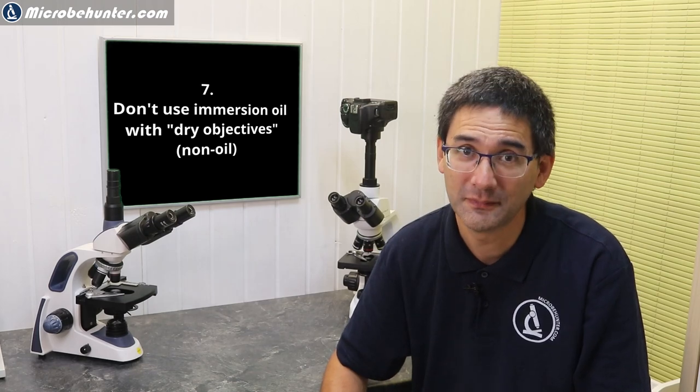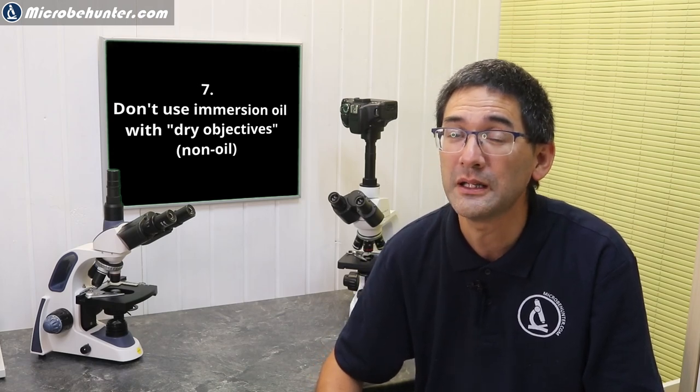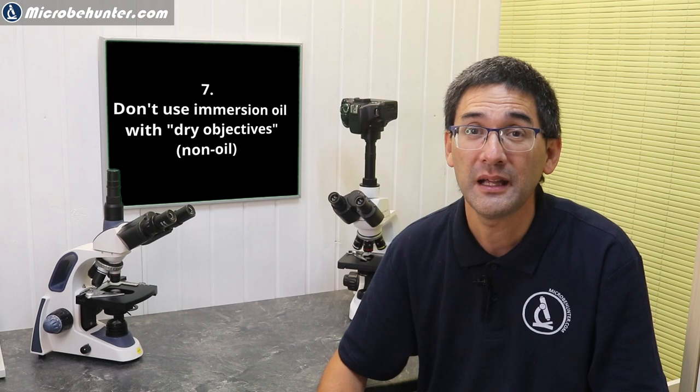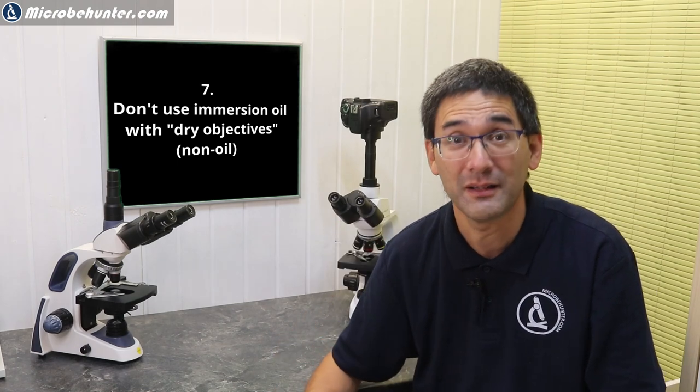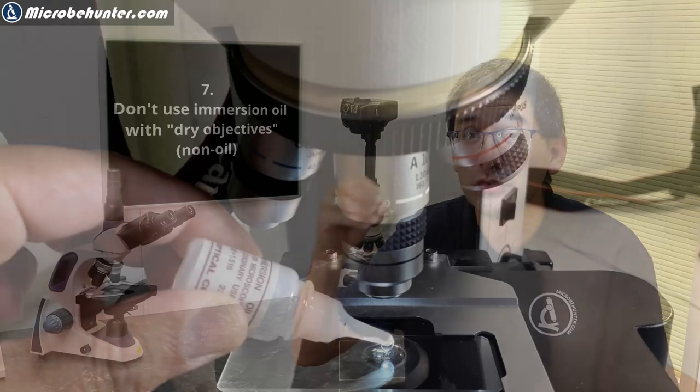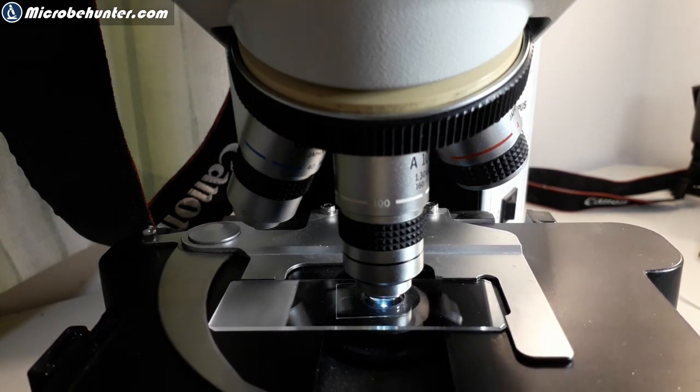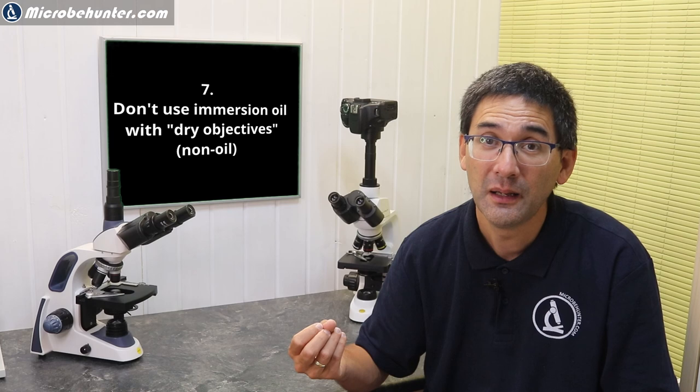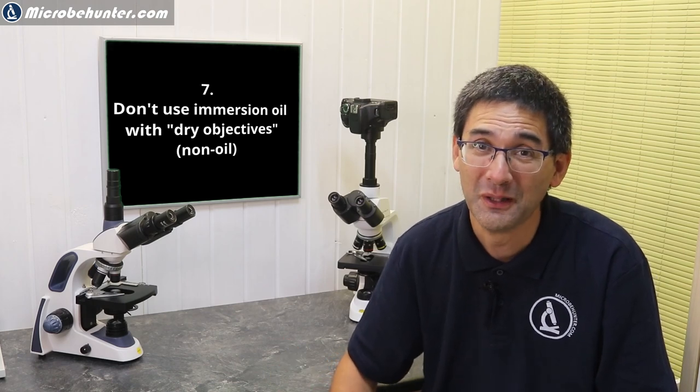Problem number seven is quite problematic: sometimes people not experienced with microscopes use non-oil immersion objectives with immersion oil, which can damage the objectives. Usually it's the 100x oil immersion objective that can be used with immersion oil—it has the word 'oil' written on it. You put a drop of immersion oil on the specimen slide, then rotate the objective directly into it. Sometimes people accidentally or deliberately also use the 40x objective with immersion oil, and that's a problem.